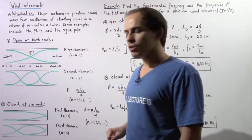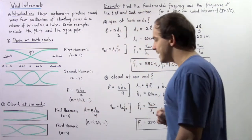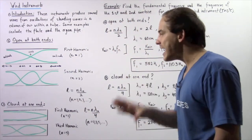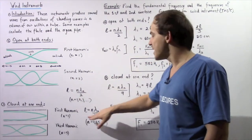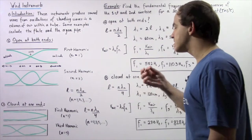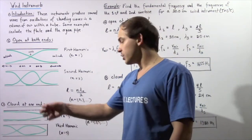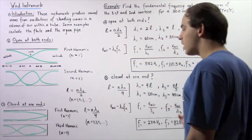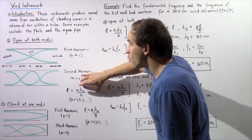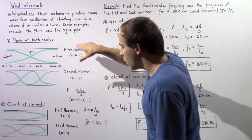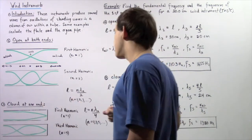Examining n equals 3, we see the following result. Generally, the formula relating the length, wavelength, and harmonic is: L equals n times wavelength divided by 4, where n ranges over odd values — 1, 3, 5, 7 — all odd numbers. This is the formula for a pipe open at both ends, and this is the formula for a pipe closed at one end.